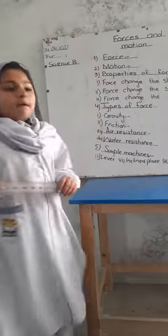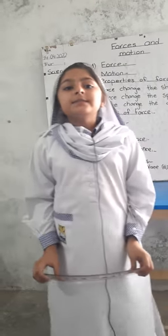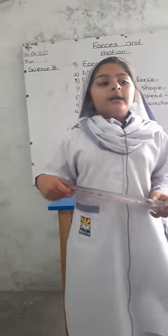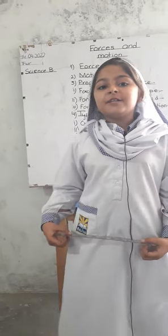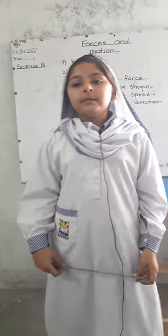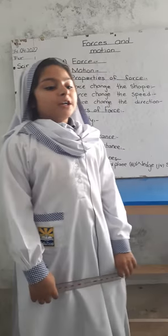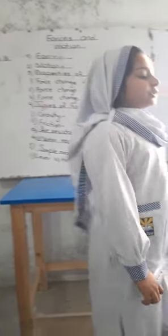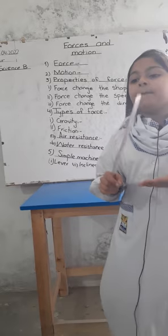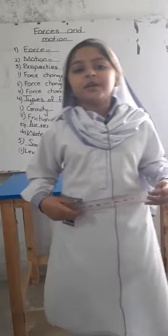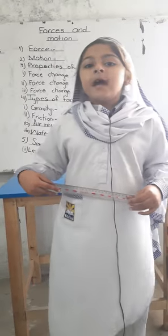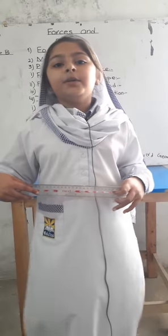Friction is a force that occurs when two surfaces rub together. There is good friction and bad friction. Good friction: I need friction to walk, and I need friction to write on paper. Bad friction: my shoe sole is worn out due to friction, and the cart's wheels are torn due to friction.